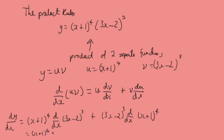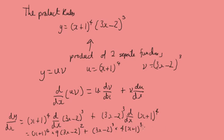We bring the 3 down, and the derivative of the thing in the brackets is 3, so it's going to be 9, times (3x minus 2) to the power 2, plus (3x minus 2) cubed, times 4, times (x plus 1) to the power 3.